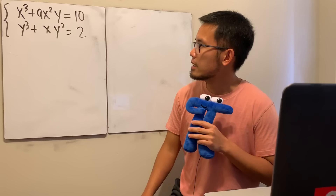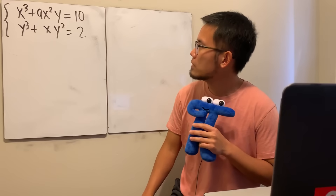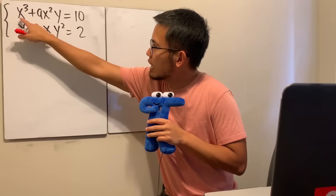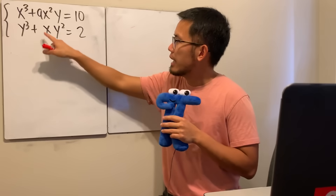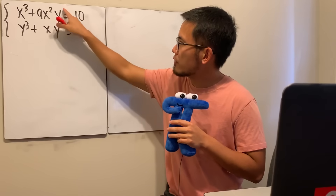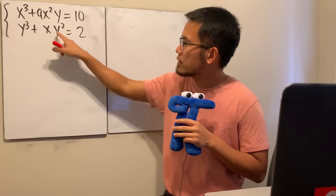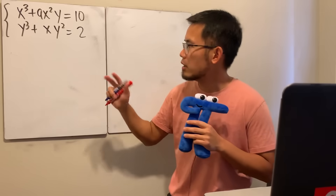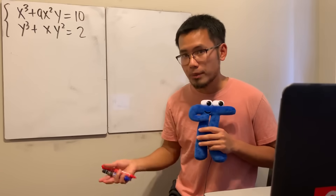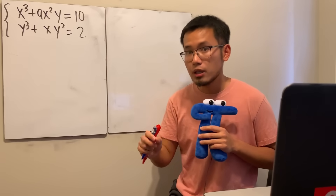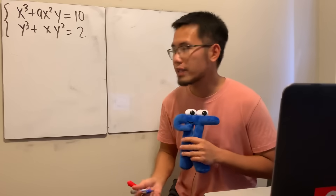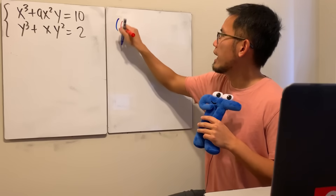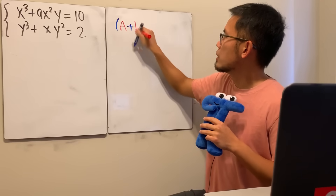Let's make some observations first. We notice that here we have x to the third power, this is y to the third power, here we have x squared y to the first, and here we have x to the first y squared. If we focus on the pattern of the powers, that should remind us of the expansion of (a + b) to the third power.